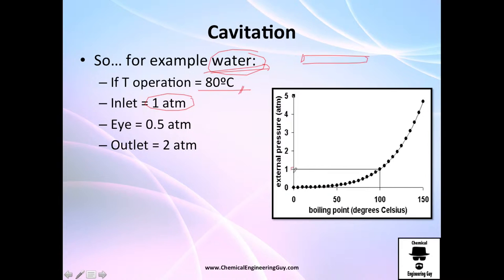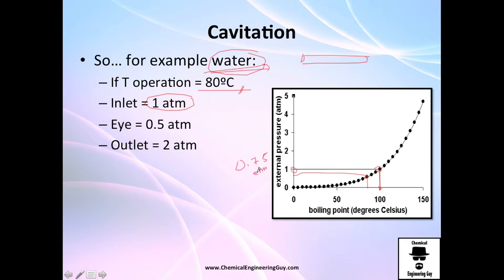For water at 80 degrees Celsius, the vapor pressure is approximately 0.75 atmospheres — meaning it will boil at that pressure. So if you have less than that pressure in the system, you will definitely get gas forming. In the eye of the pump, if the fluid enters at one atmosphere, that might seem safe.